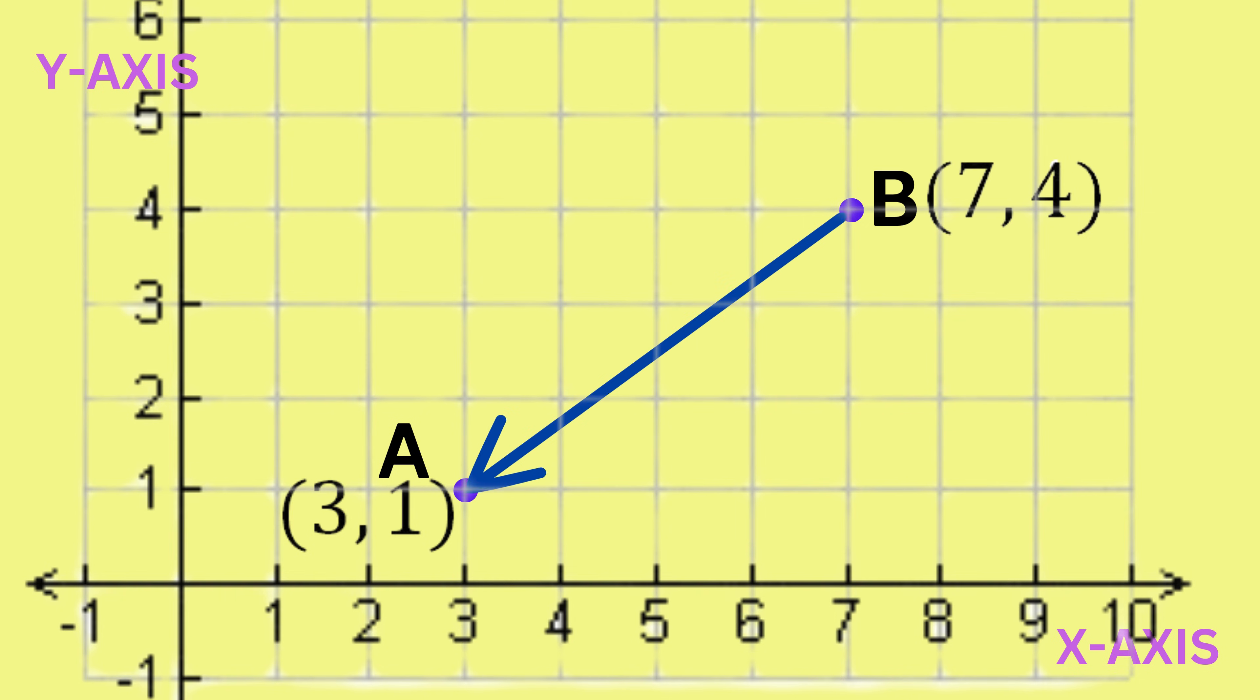Now, what if we want to find the vector BA? To answer this, we can work out how to move to get from point B to point A. We can go 4 units to the left, represented by negative 4, and then 3 units down, represented by negative 3.